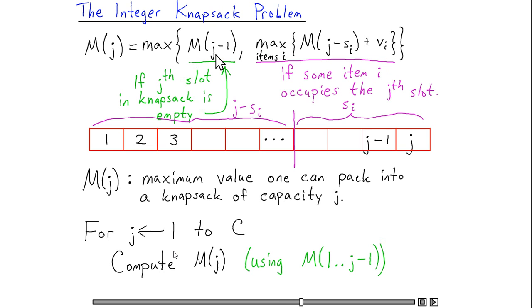this part of my maximization tells me the optimal value I can get if I fill a capacity j knapsack without using the jth location, and this part of the formula tells me the maximum value I can obtain if I fill a capacity j knapsack and use the jth location. And certainly one of these two alternatives must be the case for the optimal solution, so if I take the best of the two, then I'm going to actually find the value of the optimal way to fill a capacity j knapsack.